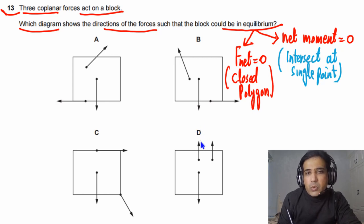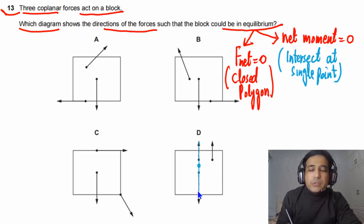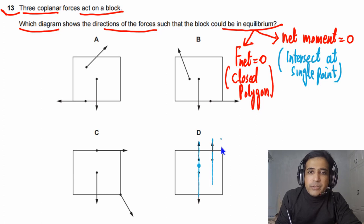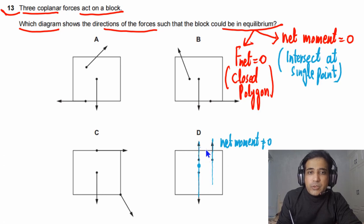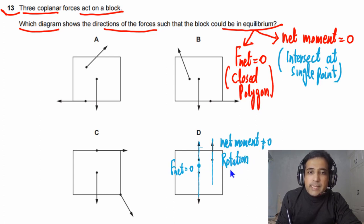Looking at option D: extending the line of action of the first two forces shows they pass through the same point, but the third force does not pass through that point. So net moment is not equal to zero. However, the sum of the two forces equals the third force, so net force is equal to zero. Since net moment is not zero, there will be rotation — so this is not our answer.